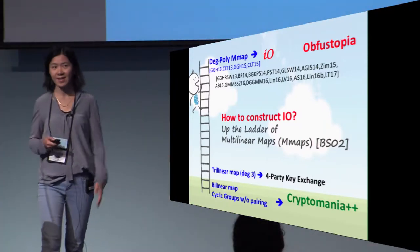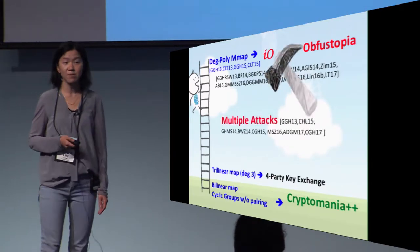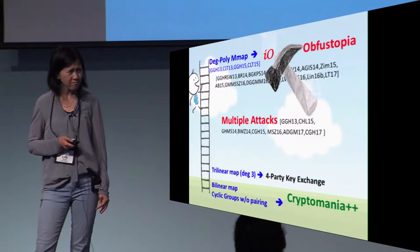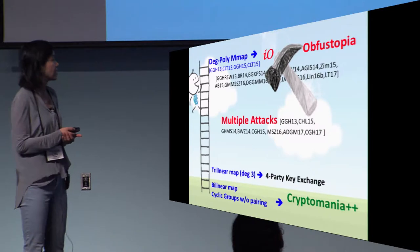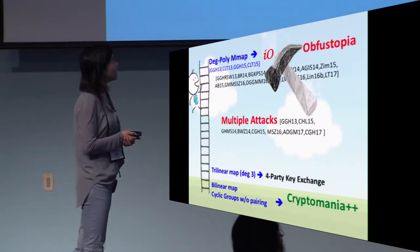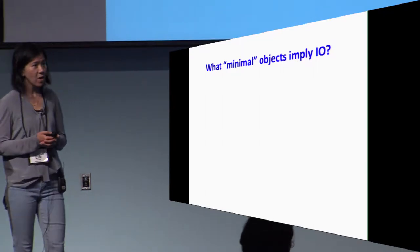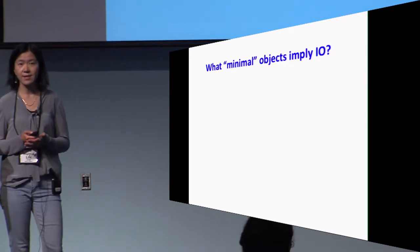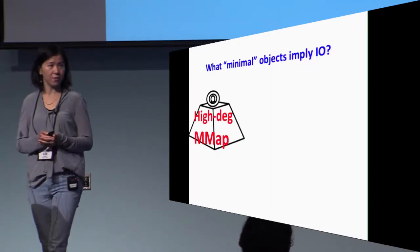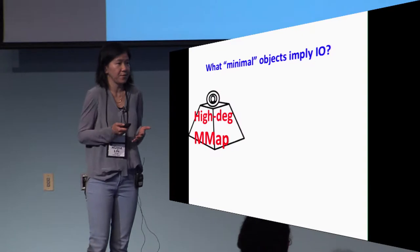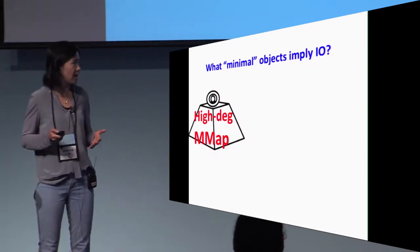This is great. The only problem here is that all the candidate constructions of multilinear maps so far, their security is far from what we would like them to have, as demonstrated in multiple attacks. Therefore, in this work our starting point is to ask a different question: What are the minimum objects that in fact imply IO?